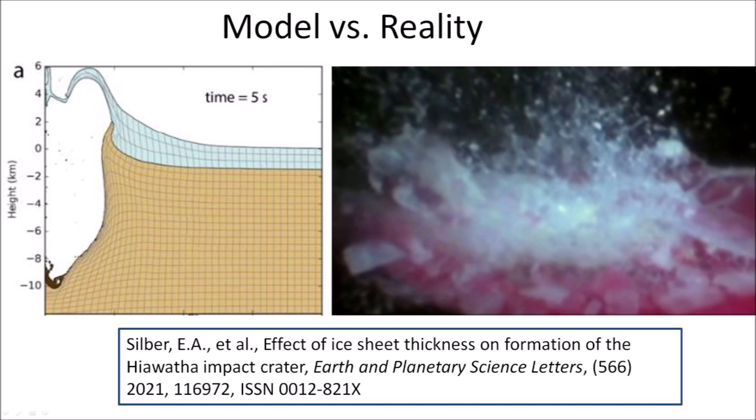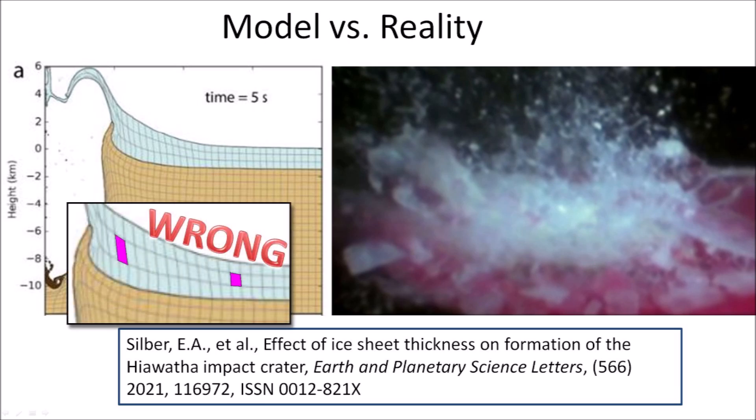It is important to rely on experimental results. In 2021, a paper by Silver et al. described the impact on an ice sheet using a model that showed the layer of ice undergoing volume changes as if it were a gas. This does not reflect reality. Experiments show that the ice sheet breaks apart from the shock and pieces are ejected away from the impact point. The computer model is wrong because it does not produce results corresponding to the real physical world, and unfortunately such models can misguide many people.